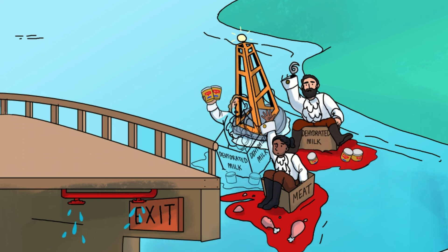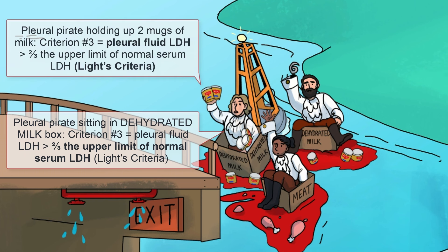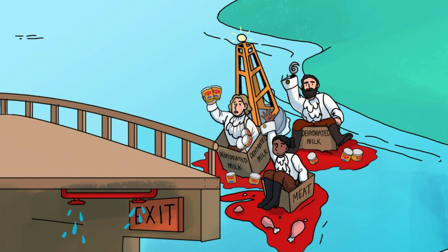The third and final criterion is a pleural fluid LDH value greater than two-thirds the upper limit of the normal serum LDH concentration. Hence our third and final puffy pleural pirate sitting in his dehydrated milk box holding up two mugs of milk. If this third criterion sounds redundant to you, well, it kind of is. The point here is to not miss exudative effusions in patients with an abnormally high serum LDH, where an objectively high pleural fluid LDH value might still not meet criterion number two.